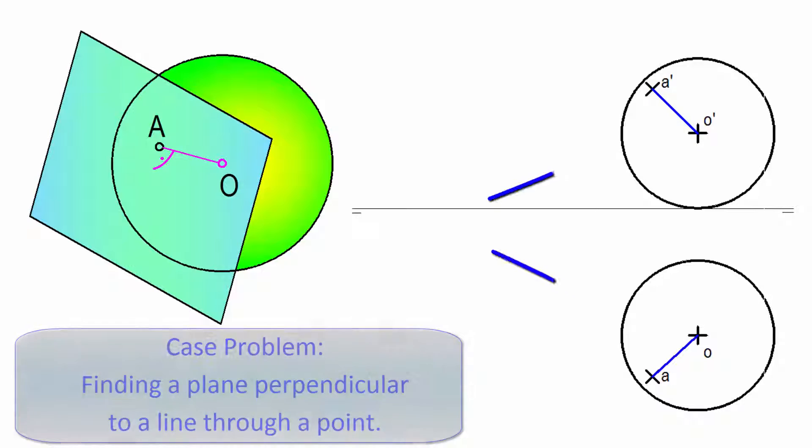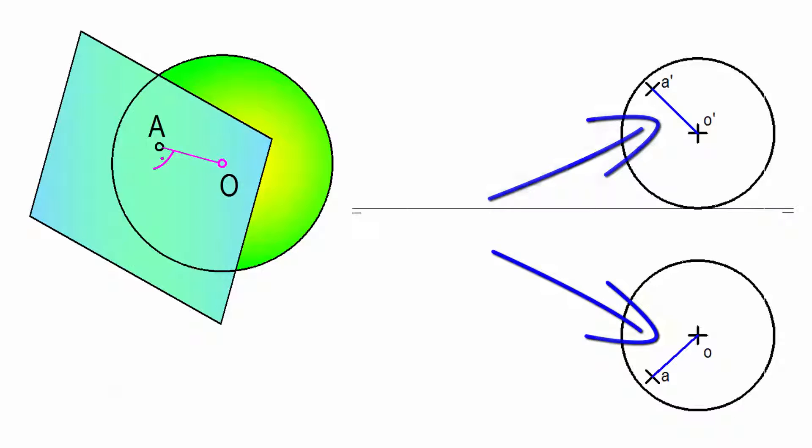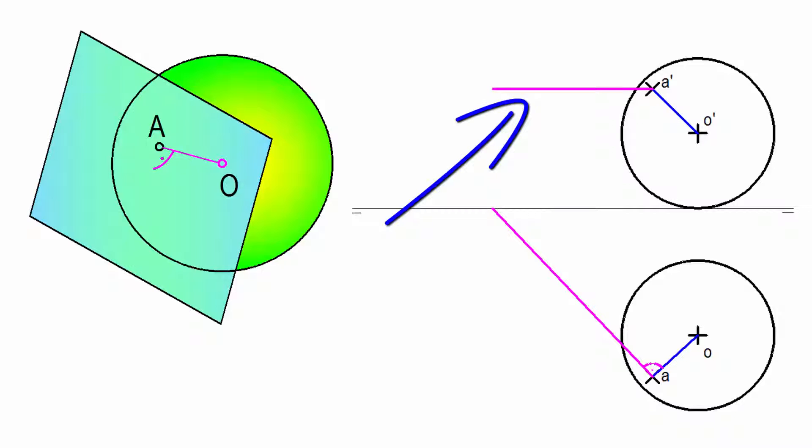We join the tangent point and the center of the sphere. Draw a horizontal line, whose horizontal projection is perpendicular to the above straight through the nip. In vertical projection it is parallel to the ground line.